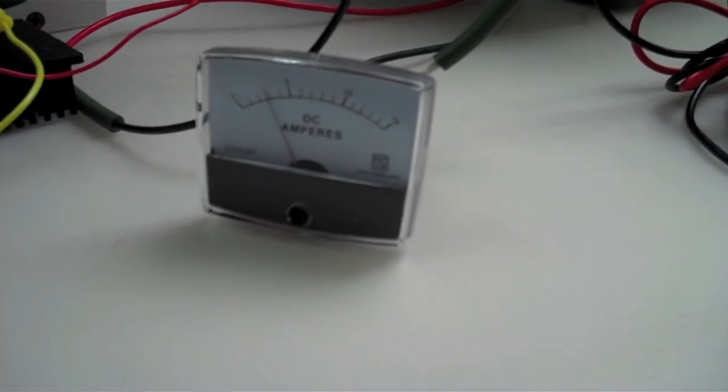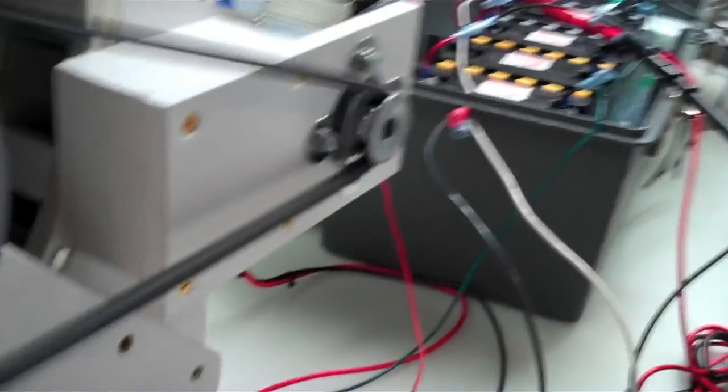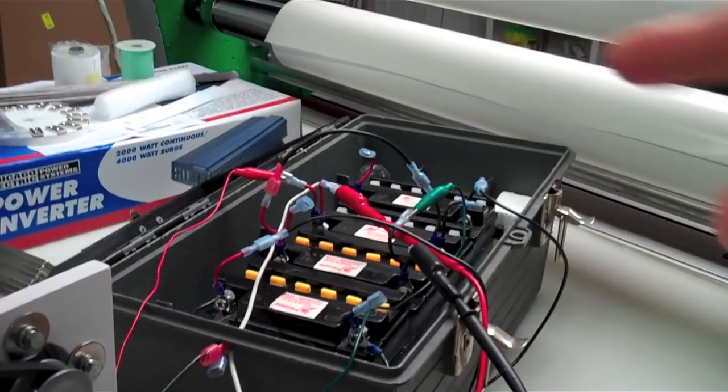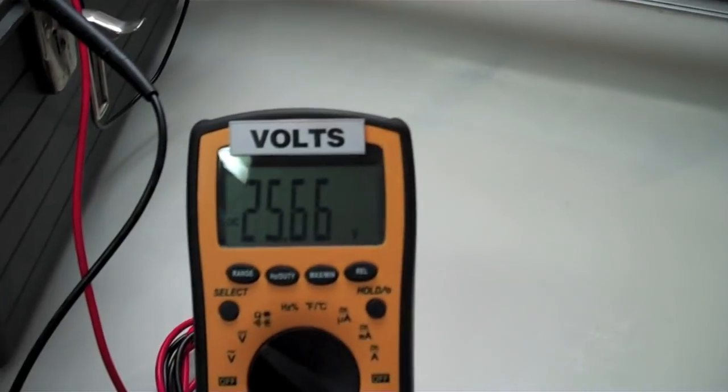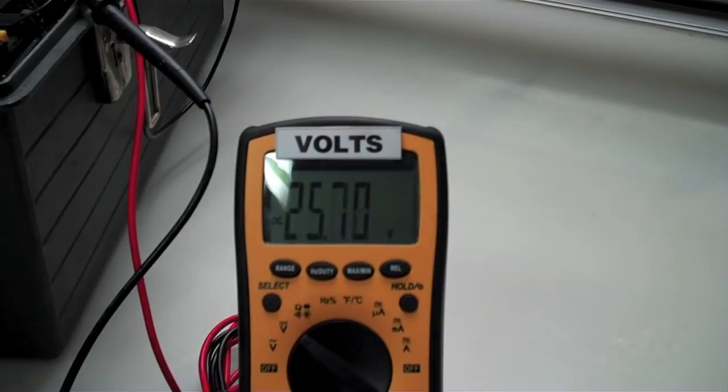And under load we're pulling less than 3 amps. You can see that. So we are pulling more power obviously to charge those batteries and run the 40 watt bulb off of the 2 in series. 25, 68, 69, 70.